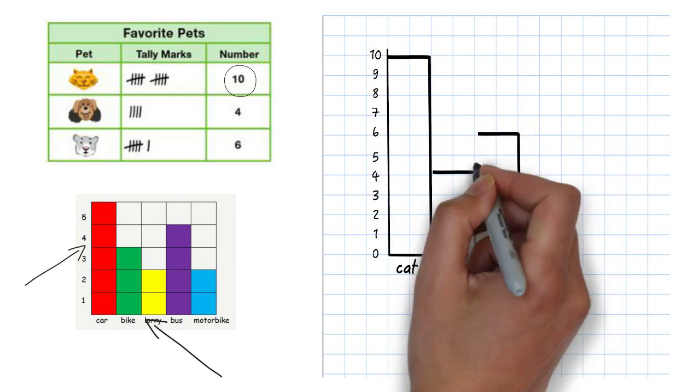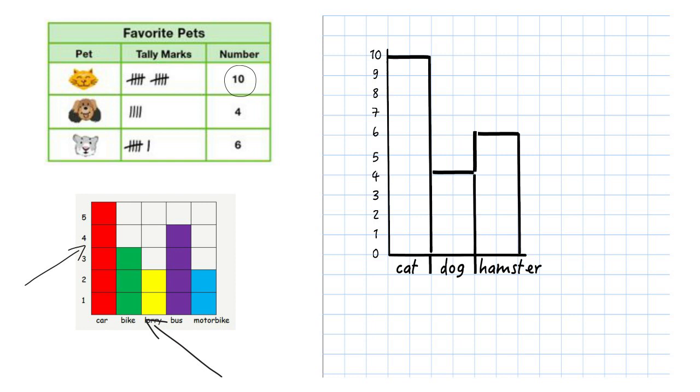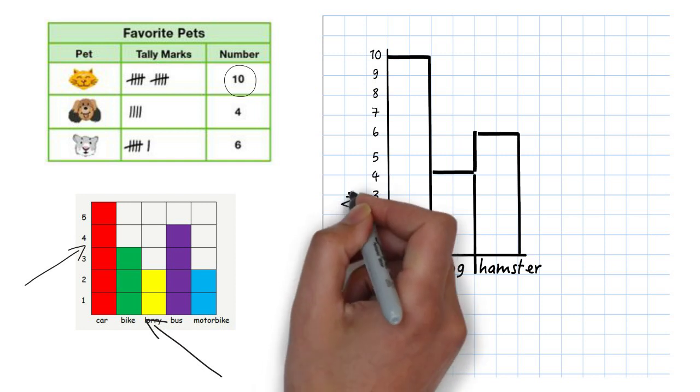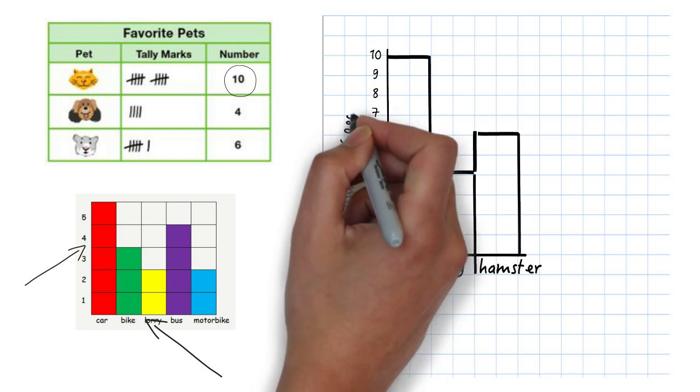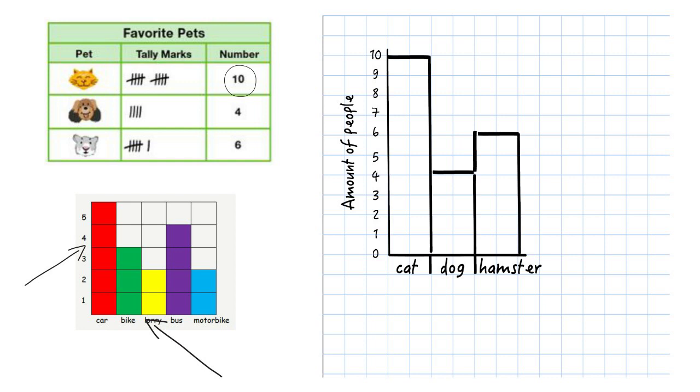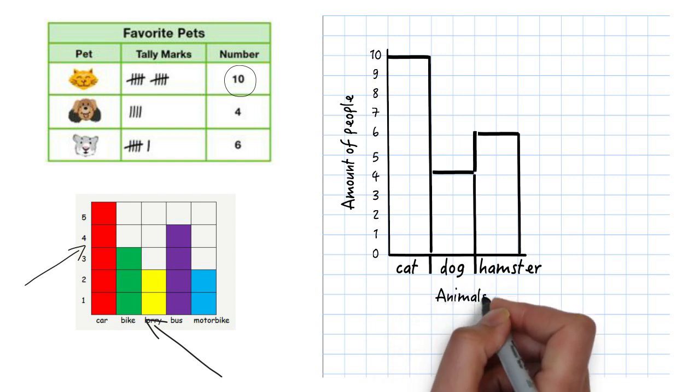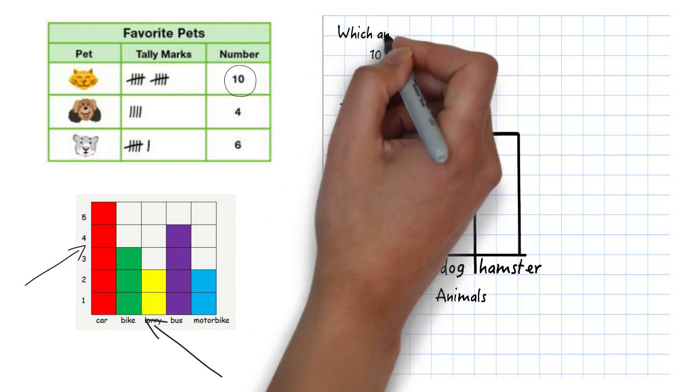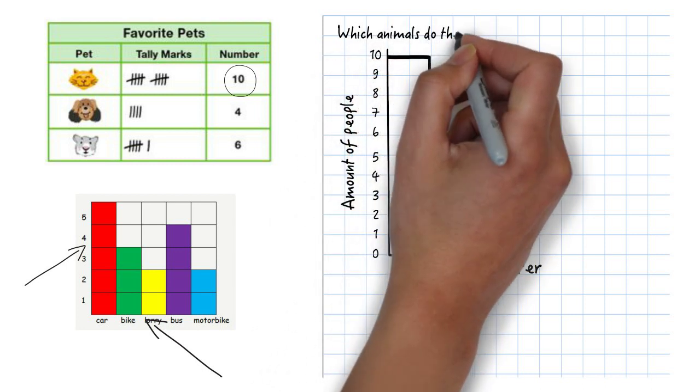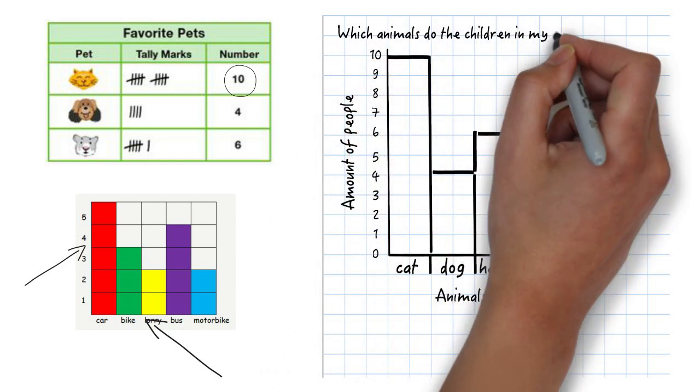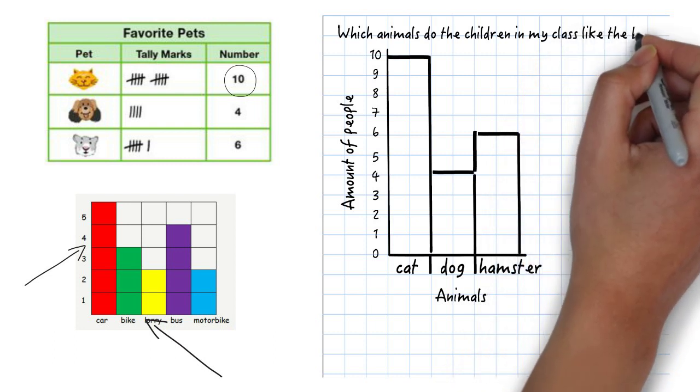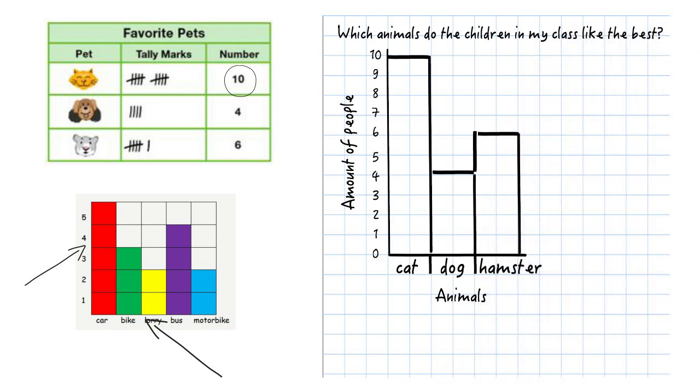You haven't finished your block graph until you've labelled each side and written a title. Don't forget to check your graph matches your table straight away. See if you can make a block graph using information you can find out at home.